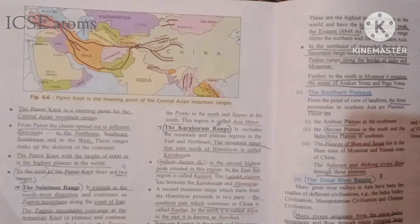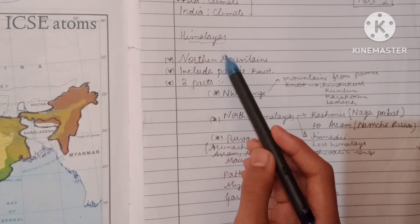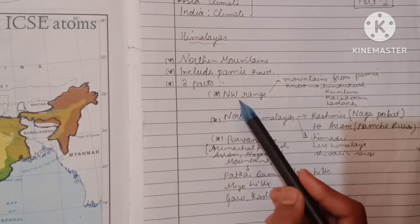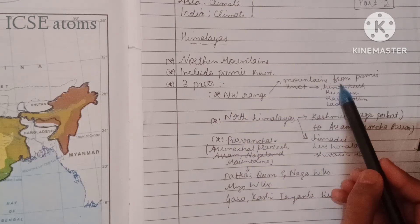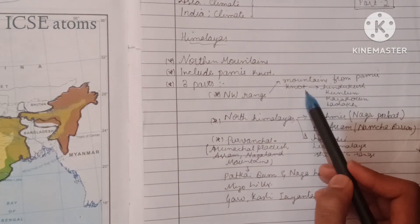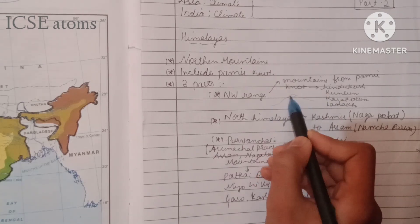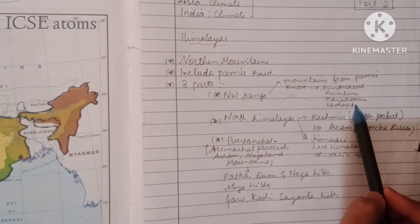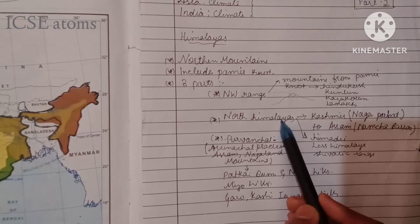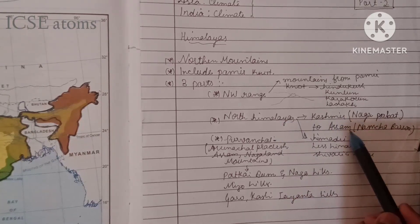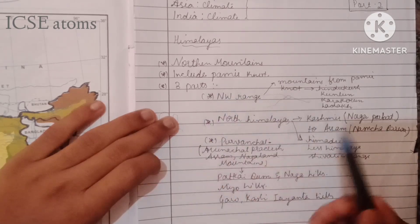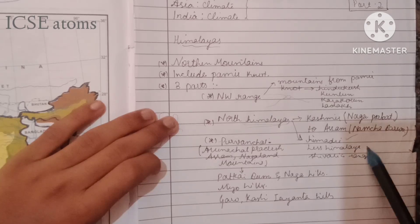The Himalayas are further subdivided into three parts: the Northwest Range, Northern Himalayas, and Purvanchal. The Northwest Range includes mountain ranges radiating from the Pamir Knot — such as Hindu Kush, Kunlun, Karakoram, and Ladakh. The Northern Himalayas start from Kashmir and run up to Assam — starting at Nanga Parbat in Kashmir and ending at Namcha Barwa in Assam. Northern Himalayas include the Himadri, Lesser Himalayas, and Shivalik ranges.